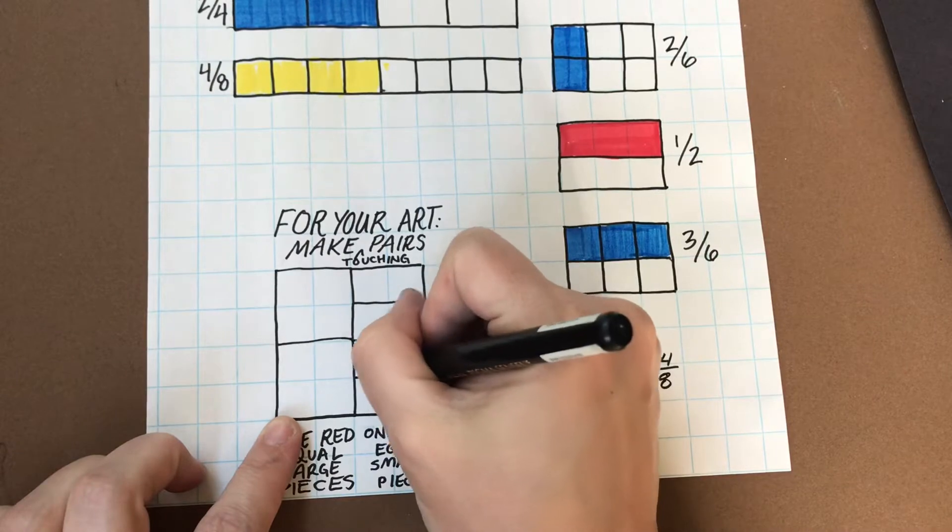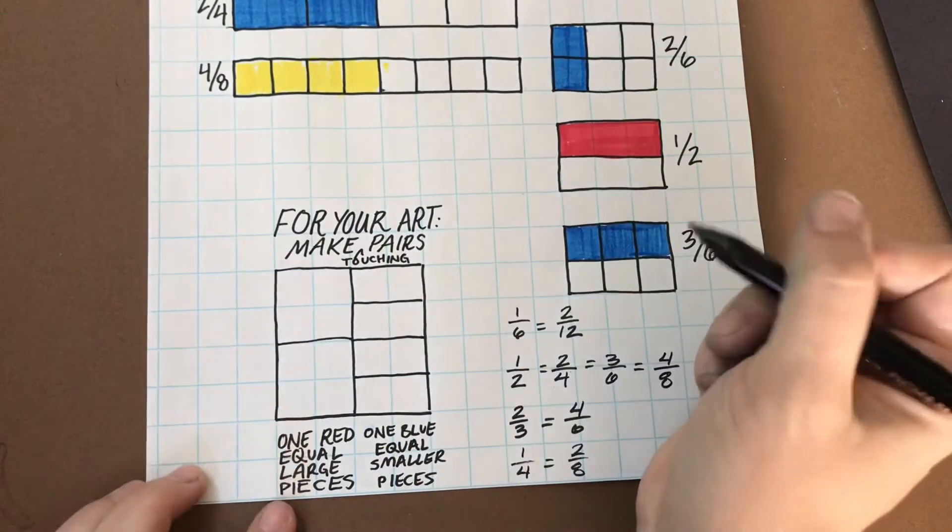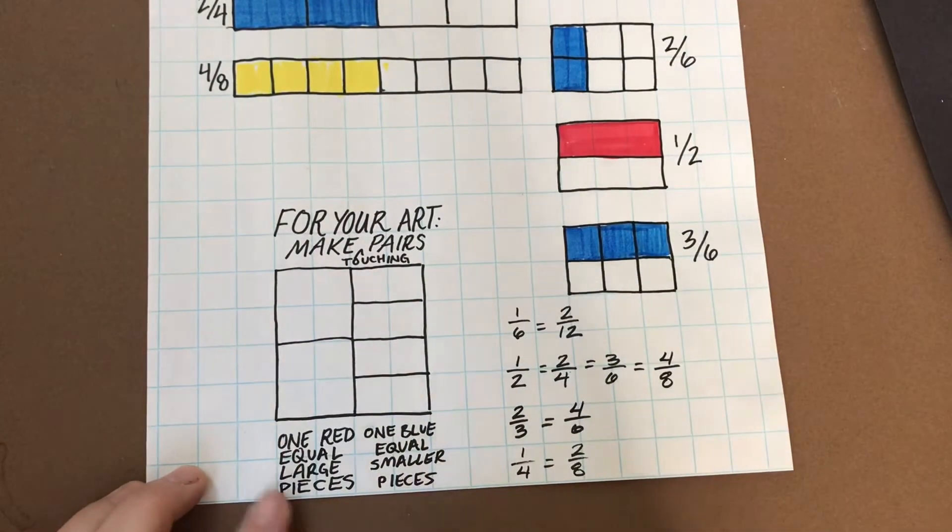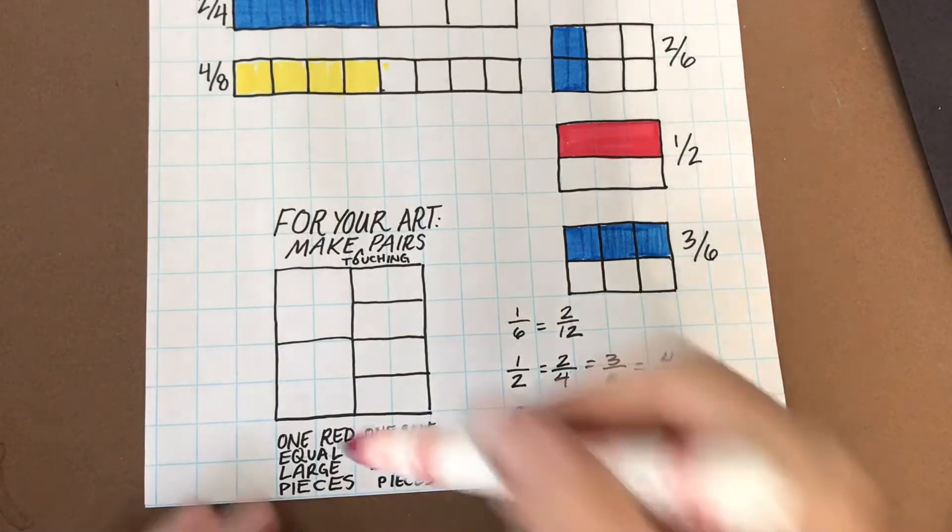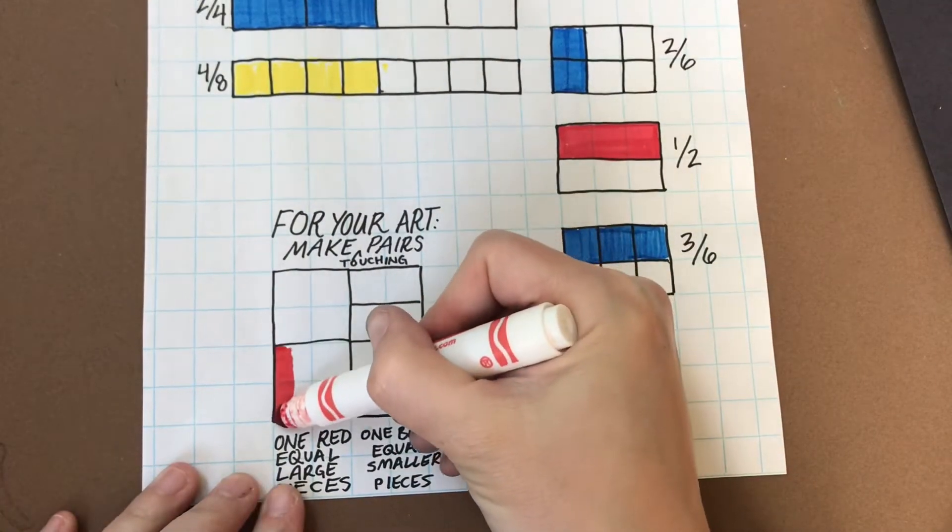One box or rectangle is divided equally into larger pieces. One box or rectangle right next to it is divided equally into smaller number of pieces.